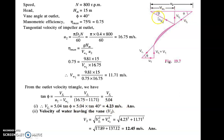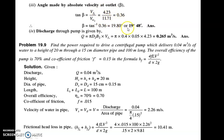Once Vf2 is known, we can find beta using tan(β) = Vf2 / Vw2. First, the absolute velocity V2 = √(Vf2² + Vw2²) = √(4.23² + 11.71²) = 12.45 m/s. Then tan(β) = 4.23 / 11.71 gives β = 19.80°. The discharge Q = π·D2·B2·Vf2 = π × 0.4 × 0.05 × 4.23 = 0.265 m³/s.